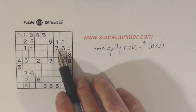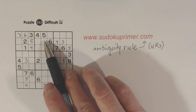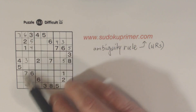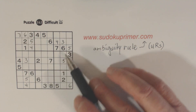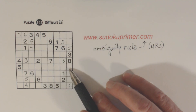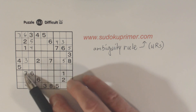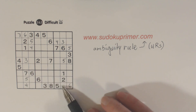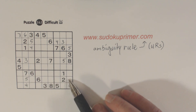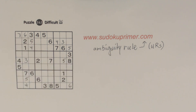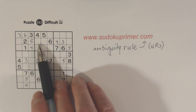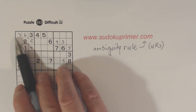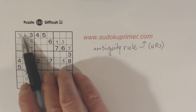So now we have our sevens placed. That's another example of how ghost numbers found that seven there, and then we can fill in the six also.